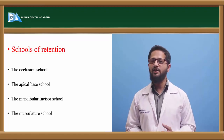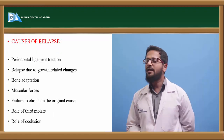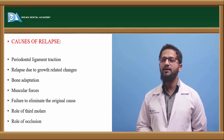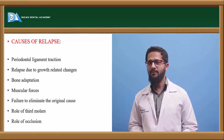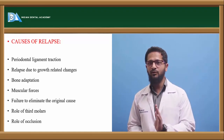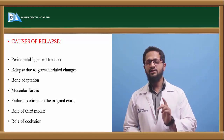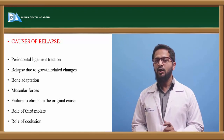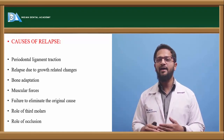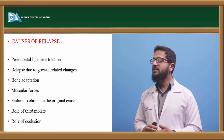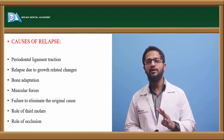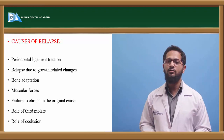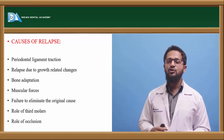There are a number of causes of relapse. First is periodontal ligament traction. When a force is applied during orthodontic therapy, the tooth moves from one place to another. The surrounding principal fibers of the periodontal ligament and the supra-crestal fibers of the gingiva get stretched and try to recoil back. The principal fibers of the PDL take about four weeks to reorganize, whereas the supra-crestal fibers of the gingiva take about 40 weeks to reorganize.